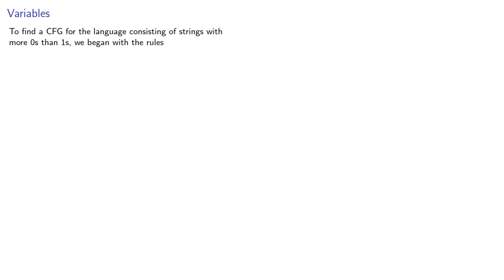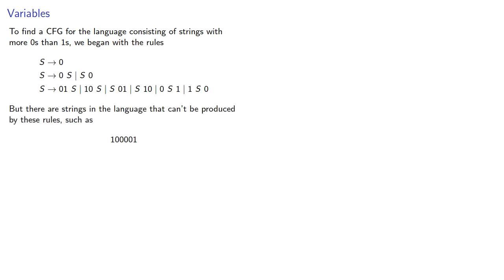To find a context-free grammar for the language consisting of strings with more 0s than 1s, we began with some rules. But there are strings in the language that can't be produced by these rules. So how can we write rules that allow us to form strings like this?